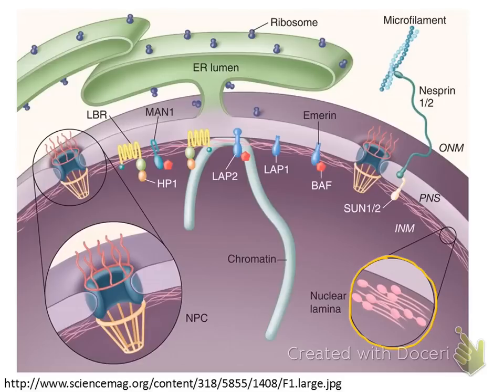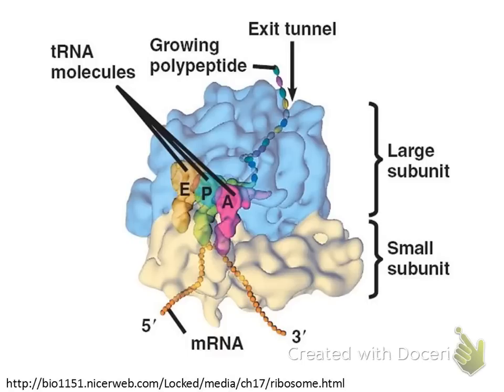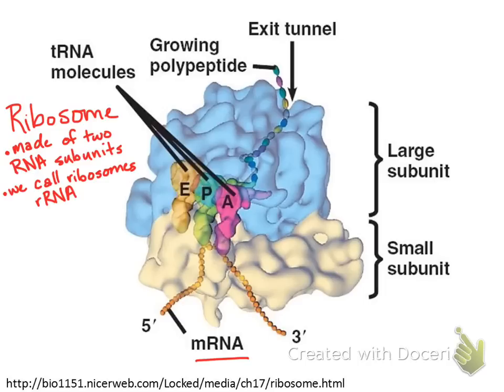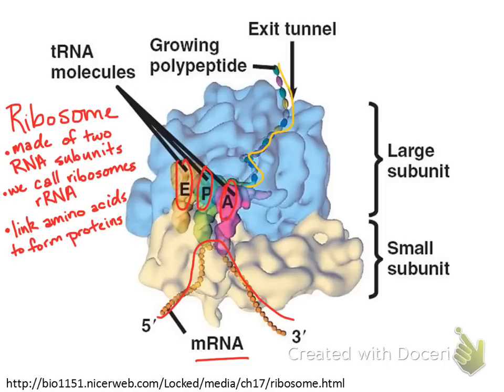The ribosomes produced by the nucleolus — which is inside the nucleus — travel out of the nucleus through those nuclear pores and into the cytoplasm. Ribosomes are made of a large subunit and a small subunit — two subunits of a special kind of RNA called ribosomal RNA, or rRNA. You can also see the mRNA and the tRNAs, and all of this helps to link amino acids together to form the growing polypeptide, or protein, outlined in yellow. These tiny machines read a gene that's been transcribed into mRNA and link amino acids together to form a protein. Ribosomes can be found free-floating in the cytoplasm or docked on the ER.